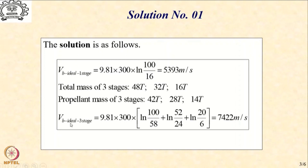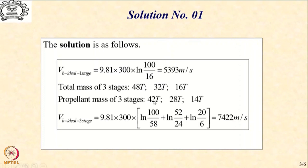With this, let us calculate the ideal burnout velocity for the three-stage operation. We get the same 9.81 × 300, but inside we now have three terms. The first term corresponds to burning 42 tons of propellant in the first stage: we start with 100 tons, burn 42 tons, and are left with 58 tons. Moving from the first stage to the second stage, we remove the 6-ton inert mass of the first stage. So we start the second stage operation with 52 tons, then burn 28 tons of propellant, leaving 24 tons at the end of the second stage.